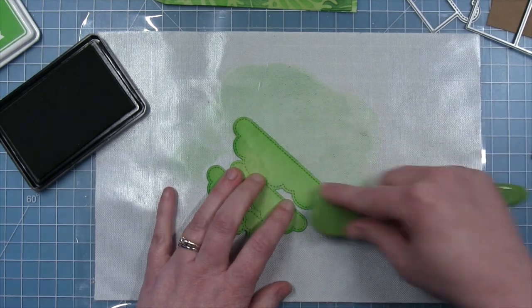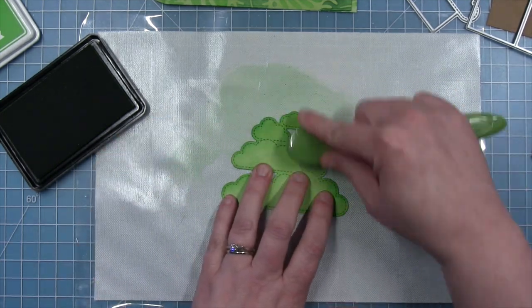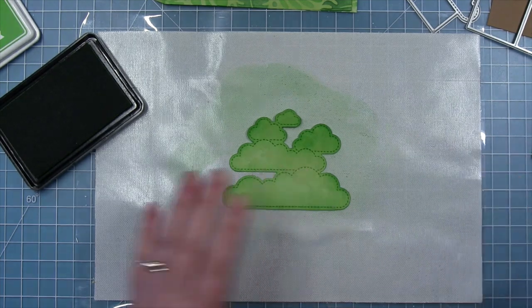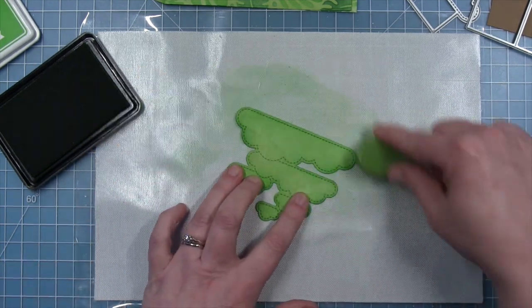This will also allow me to ink up the bottom of this big cloud at the bottom, so that my whole tree canopy looks the same.